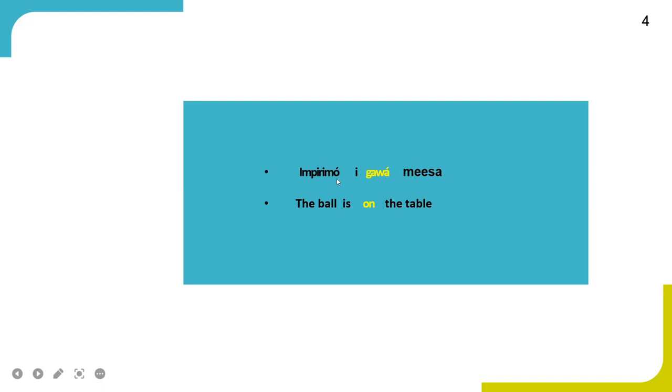Empyrimo means 'ball,' Misa stands for 'table,' and he is a Bergen speaker.